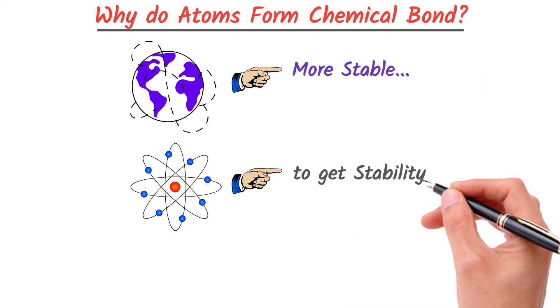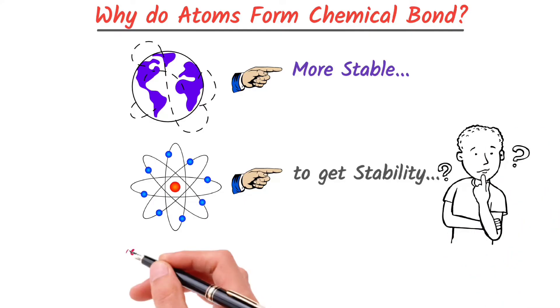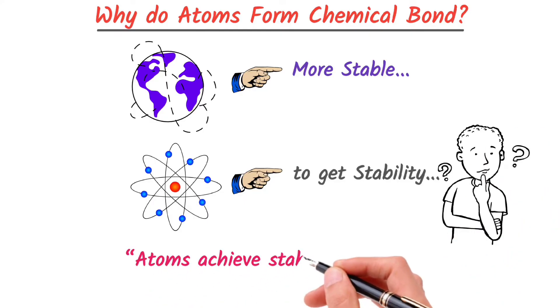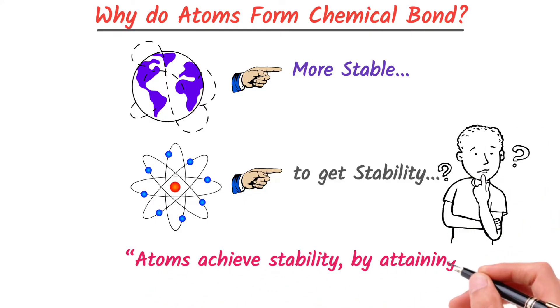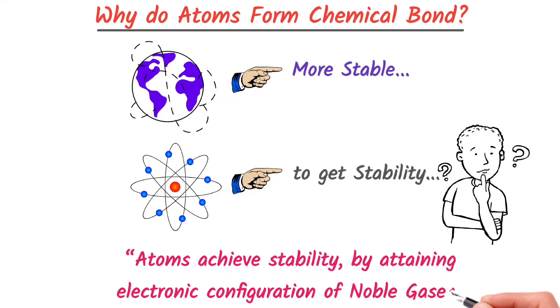So how do they achieve stability? Atoms achieve stability by attaining the electronic configuration of noble gases.